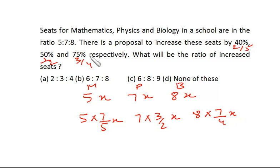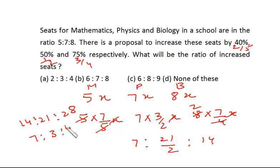Now we can find out the ratio. It is 7 : 7 times 3/2, that is 21/2 : 14. Or we can say it is 14:21:28, or even we can simplify it.